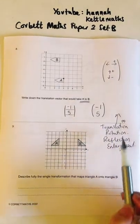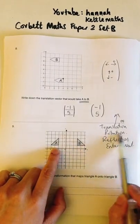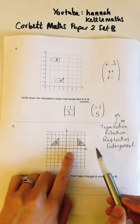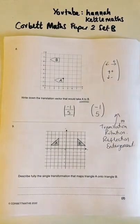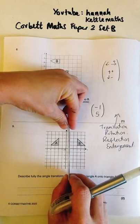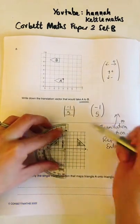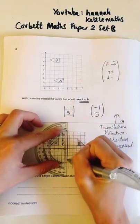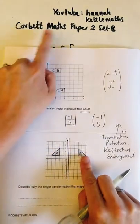Looking at this question — has it just been moved? No, the orientation is different. Has it been turned? Kind of, but actually the obvious choice here is reflection. We want to think about the mirror line — it needs to be exactly halfway between the shapes. With one-two-three-four-five squares, we need to go two and a half, so that's the mirror line.